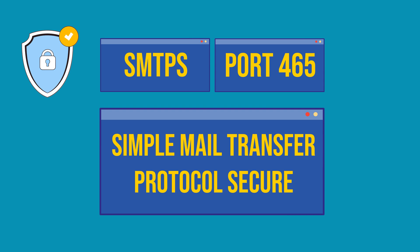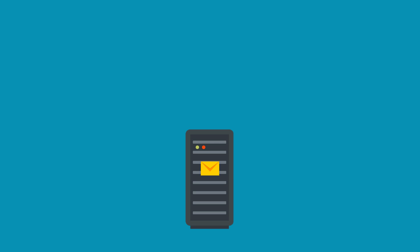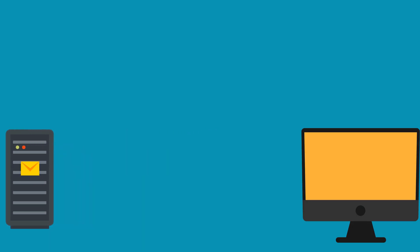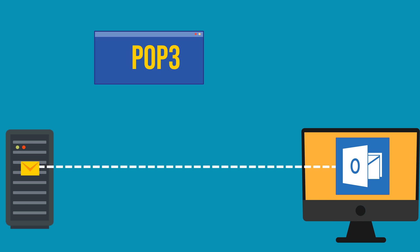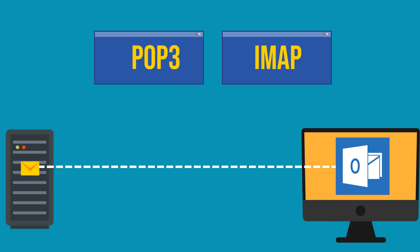The email you sent has already been delivered to the recipient's mail server. From there, the process of reaching the recipient's mail client is facilitated by protocols like POP3 and IMAP. These protocols enable the retrieval of emails from the server to the recipient's email application or client.